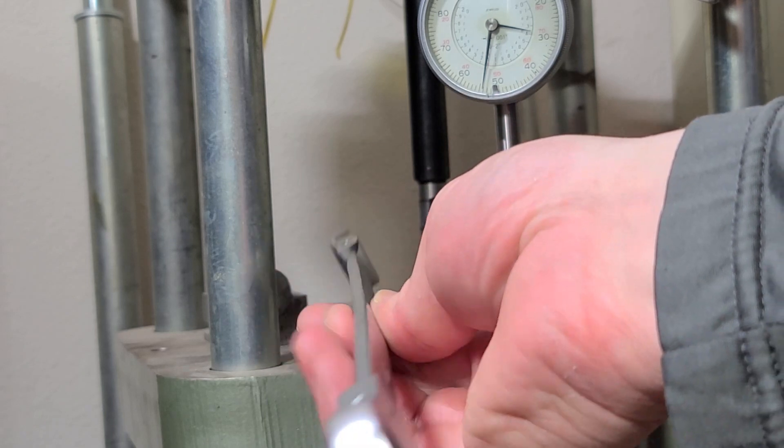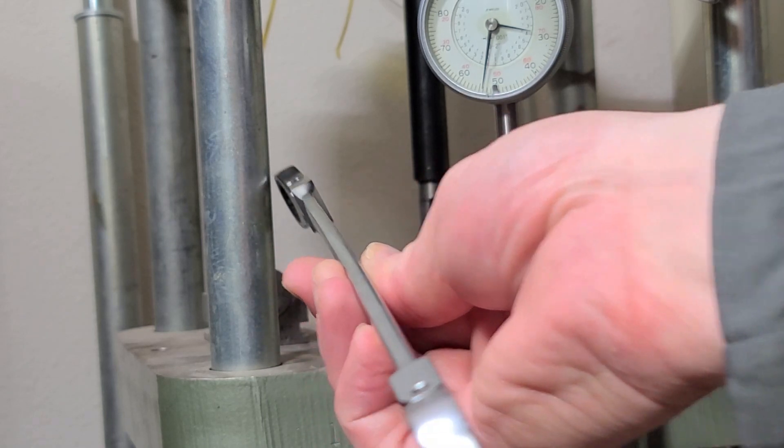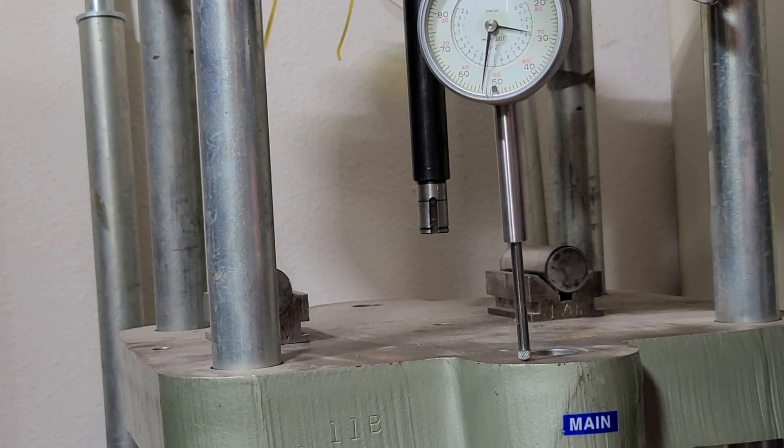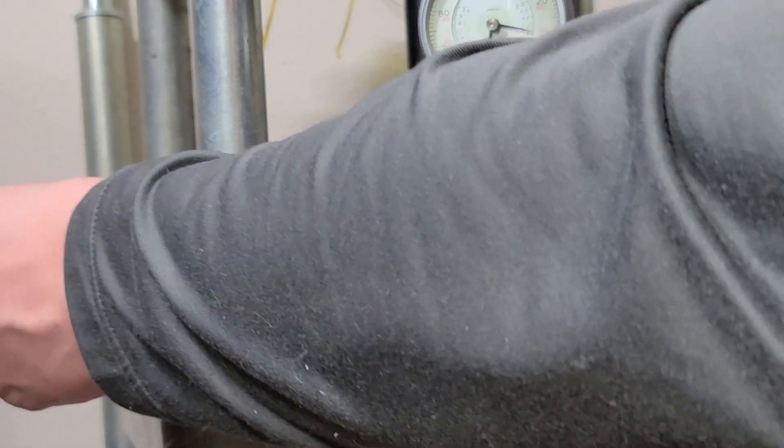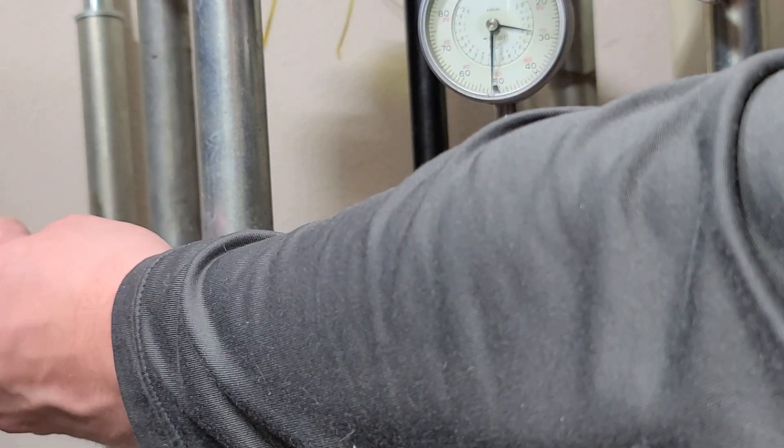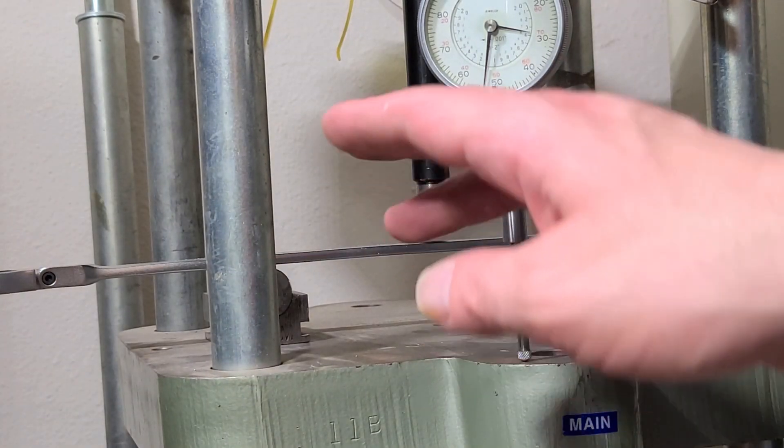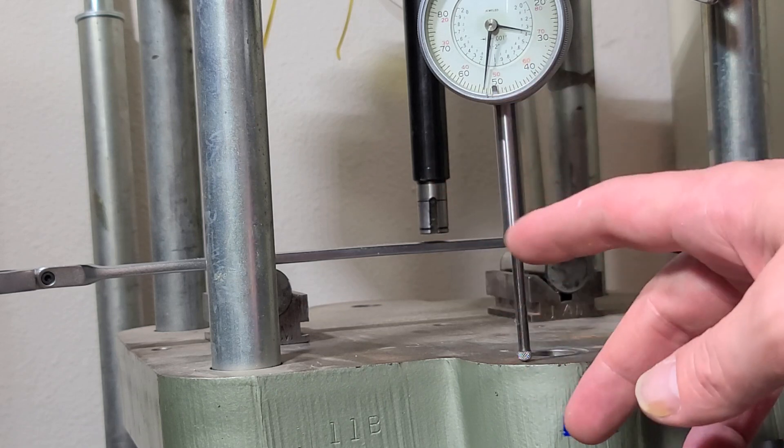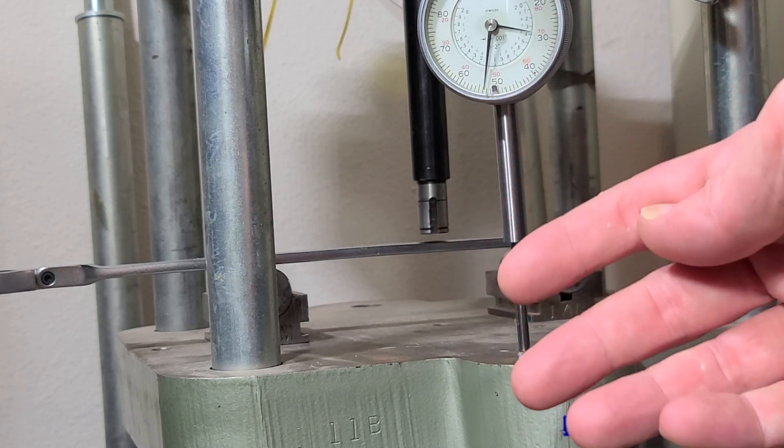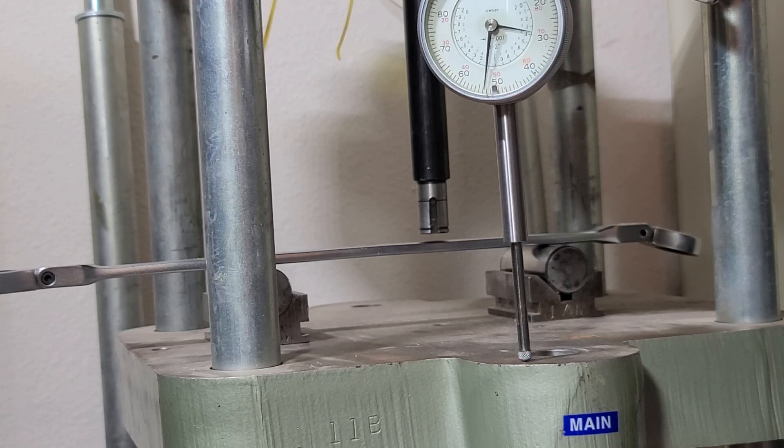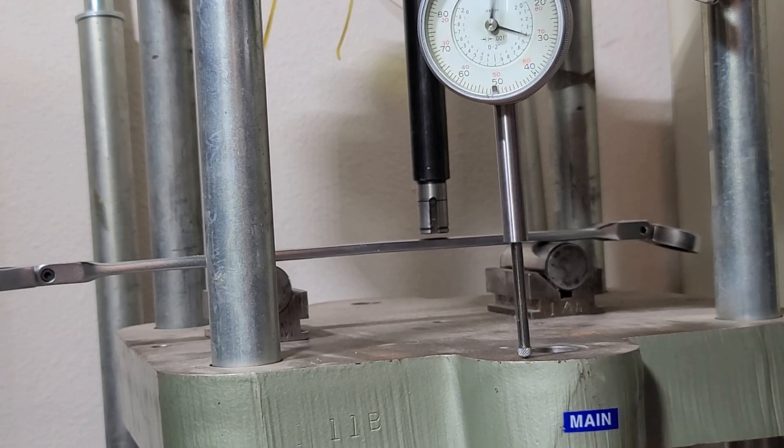Always make sure that you have the wrench facing the correct direction. It really sucks to try to straighten out a wrench and realize you just did a pass with it upside down—you just re-bent it back to where it came from, because of course it wastes a whole bunch of time.